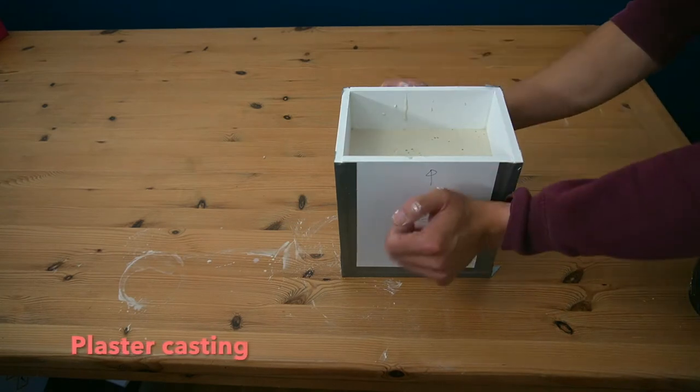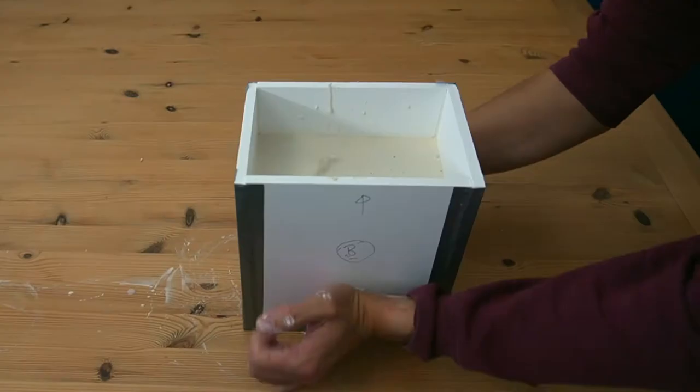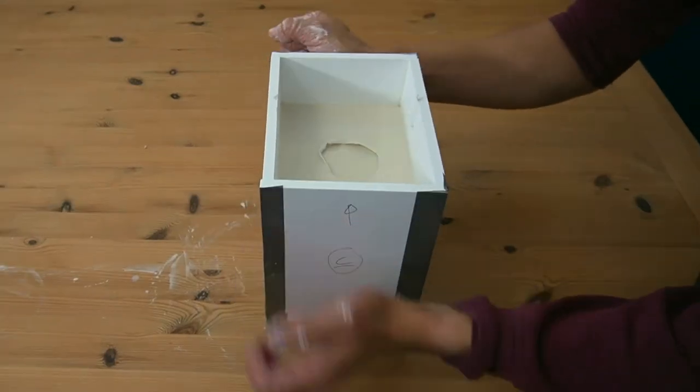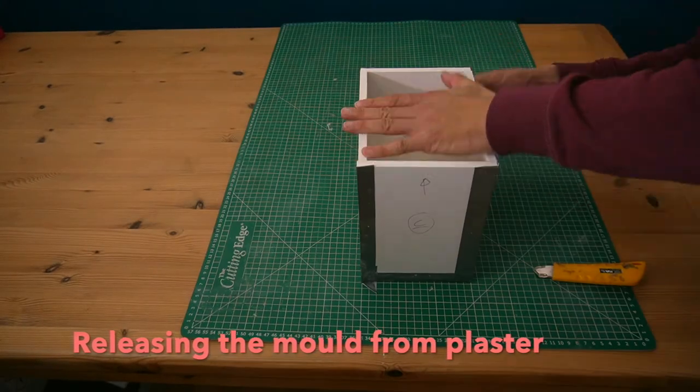Pouring in and making sure we release any trapped bubbles. After 30 minutes, the plaster should be safe to remove from the mold.